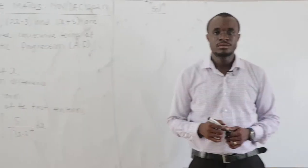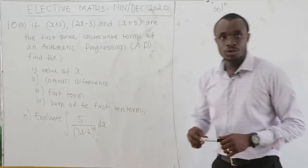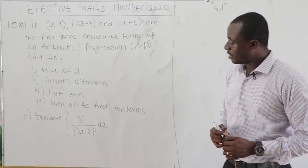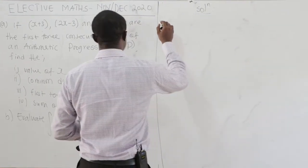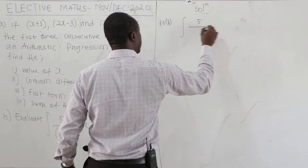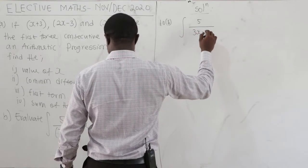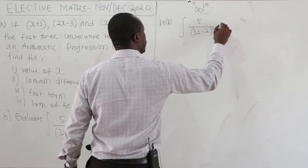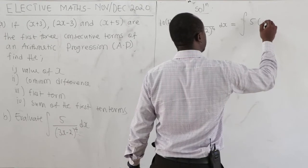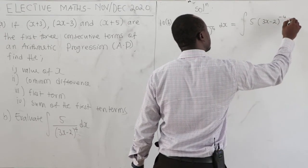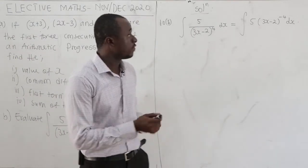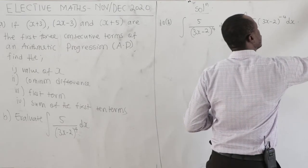Don't forget to subscribe. Now 10B, NABDEC 2020: we evaluate the integral of 5 over (3x minus 2) to the power of 4 dx. We rewrite this as the integral of 5 times (3x minus 2) to the power of negative 4 dx.